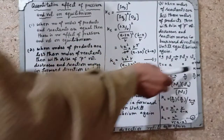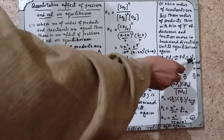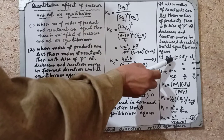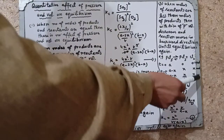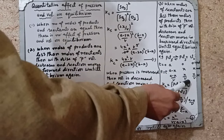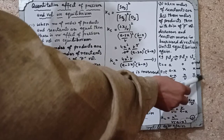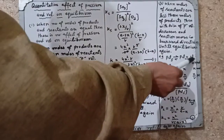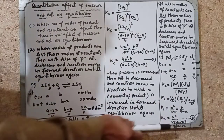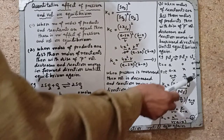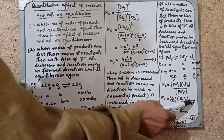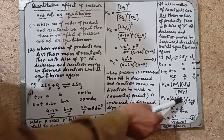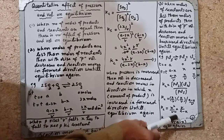PCl₅ ⇌ PCl₃ + Cl₂۔ PCl₅ کے A moles ہیں، PCl₃ اور Cl₂ کے ابھی 0 moles ہیں۔ Product کے 2 moles ہیں اور reactant کا 1 mole ہے، یعنی reactant کے moles کم ہیں۔ کچھ PCl₅ decompose ہو جائے گا تو A minus X moles رہ جائیں گے، اور PCl₃ اور Cl₂ کے X X moles بن جائیں گے۔ Molar concentration کے لیے total volume V پر divide کریں: A−X over V، X over V، اور X over V۔ Kc = (PCl₃ concentration × Cl₂ concentration) / PCl₅ concentration = (X/V × X/V) / (A−X/V)۔ Simplify کریں تو Kc = X² / [V × (A−X)]۔